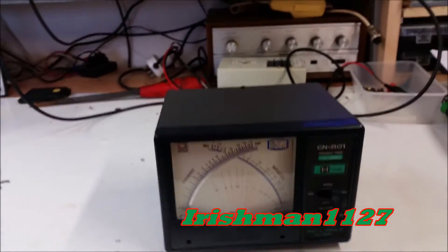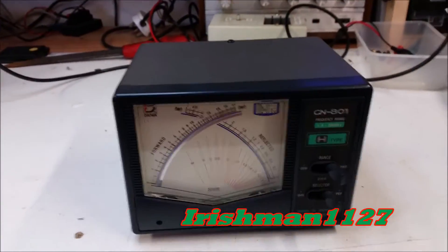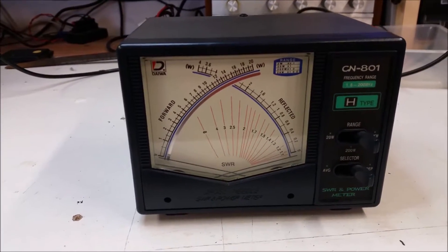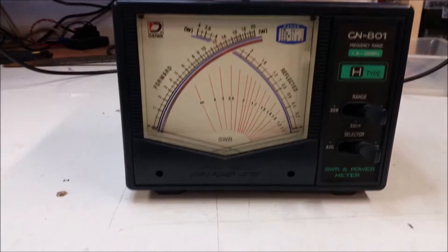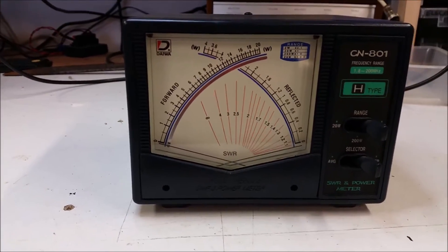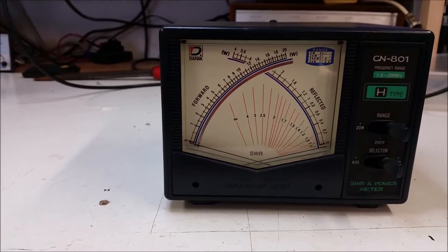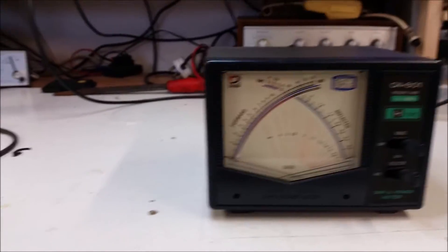Okay, I have this meter here I've had for quite a number of years. It's a Diwa CN801, a three-scale forward reading SWR meter: 20 watts, 200 watts, 2 kilowatts. It does average and PEP.